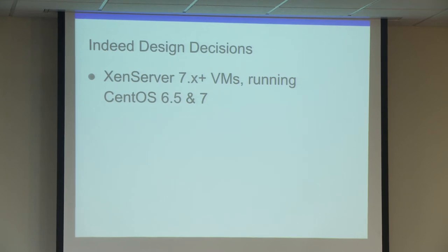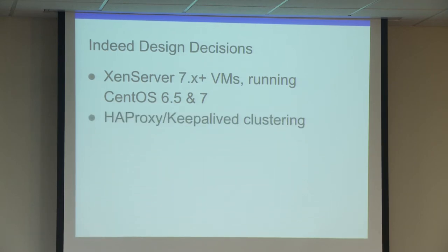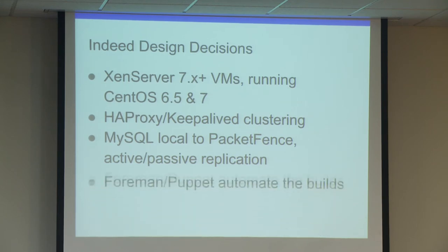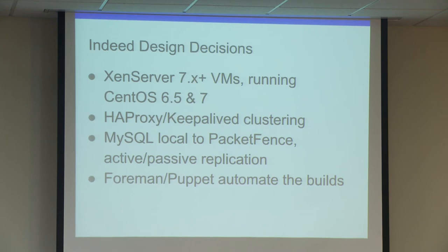At Indeed, we chose to go with XenServer, running version 7 and above, and standardized on CentOS 6.5 and 7. We went with the clustered version using HAProxy and Keepalived. Keepalived uses VRRP to move a clustered IP between the two PacketFence servers, and HAProxy proxies requests from the VRRP IP to the active node. We use active-passive MySQL replication to keep the two databases in sync, and we use Foreman and Puppet to automate deployment and control configuration. When we need to make a config change across 22 PacketFence installations, we make it once in Puppet and it pushes out everywhere.